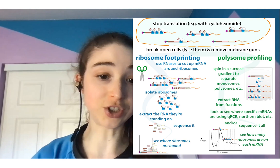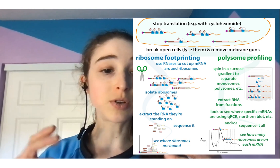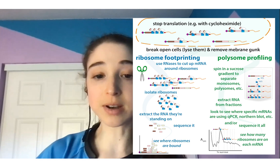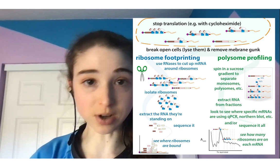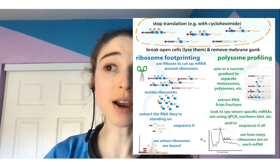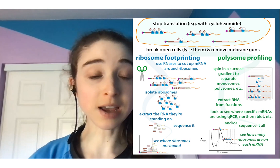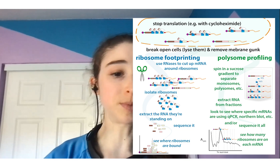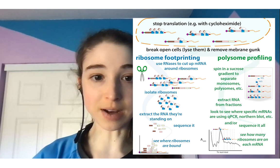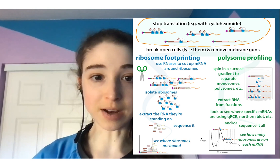Popularity also increases ribosome occupancy — the number of messenger RNAs of a gene that are bound by a ribosome, like how many copies of the ride actually have boats on them. Different mRNAs are different lengths, and longer mRNAs can have more ribosomes bound at a time but take longer to finish. You can account for this by looking at ribosomes per length unit, giving a fairer comparison between genes — like comparing Pirates of the Caribbean versus 'It's a Small World.'